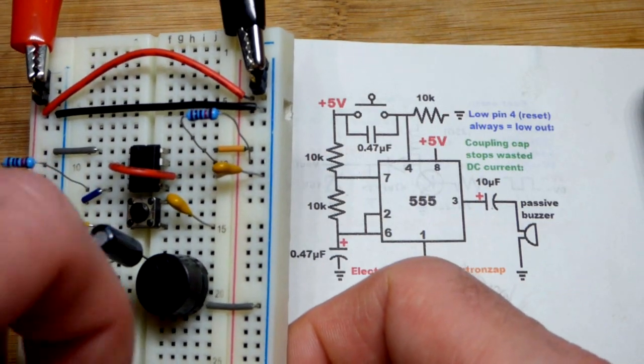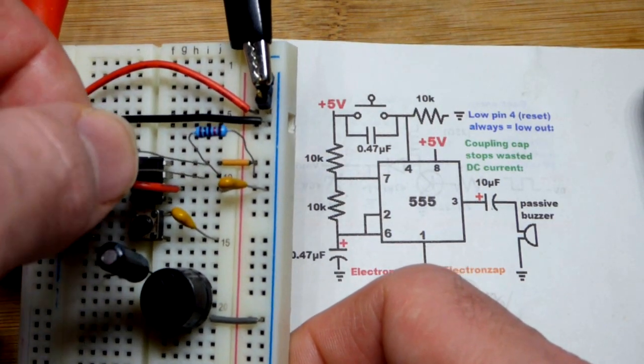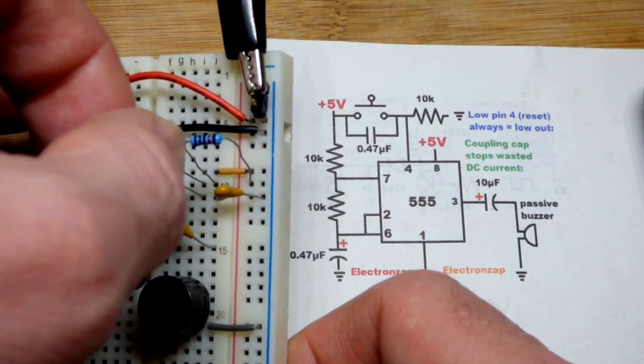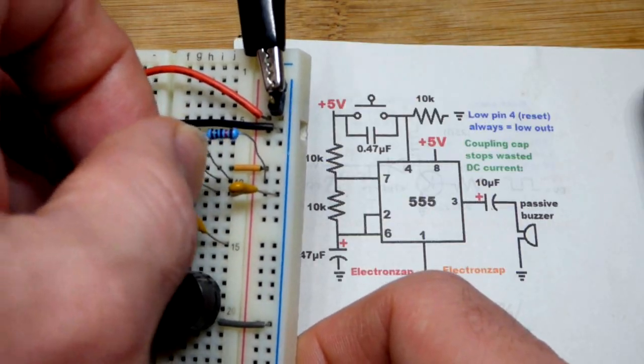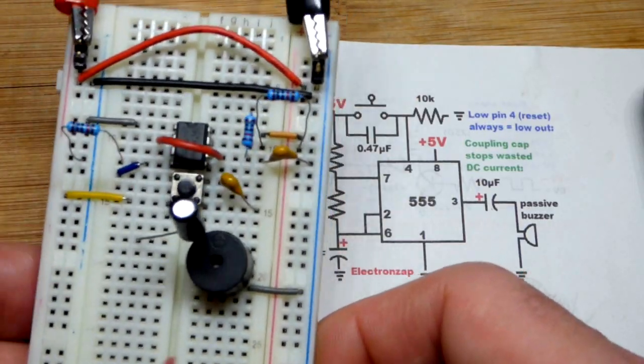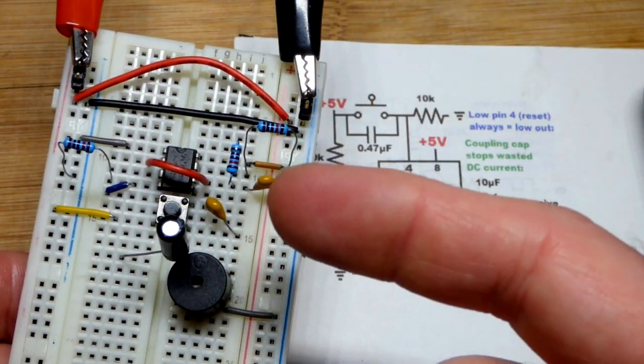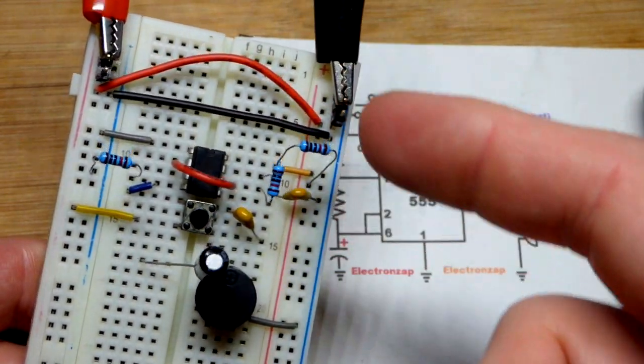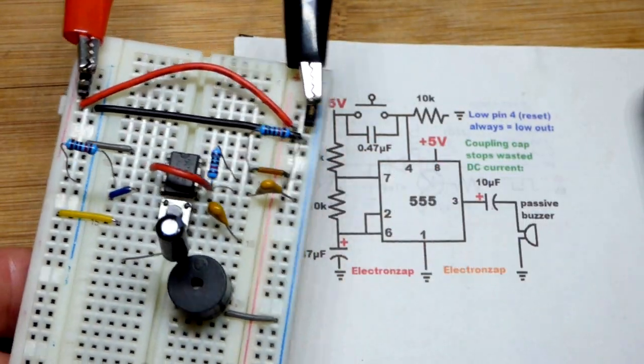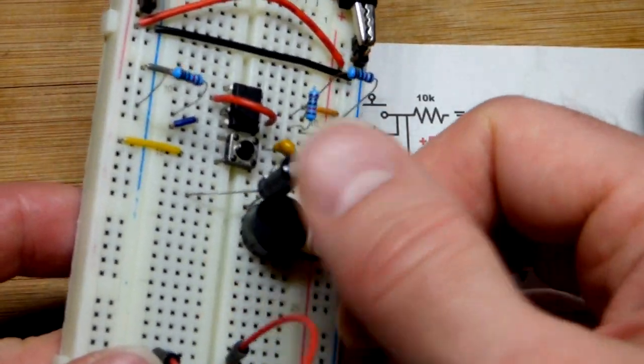Now we got this other 10k resistor. Again, we're gonna charge through two resistors, so it's gonna take twice as long to charge versus when it is discharging. That is, when the output is high versus when the output is low. Twice as long to charge as discharge, I think I said that right.